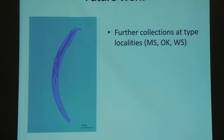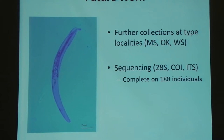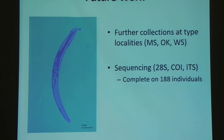For future work, I'll be collecting at further type localities including Mississippi, Oklahoma, and Wisconsin. I'm a year into my degree now, so we have ambitious sampling going on at the beginning of the summer before I do my next round of genetic work. I'll be sequencing that next round: 28S, CO1, and ITS — those molecular marker genes I mentioned — for 188 individuals, whereas I've done 94 so far. I'm hoping to have a little more time to do that sequencing.